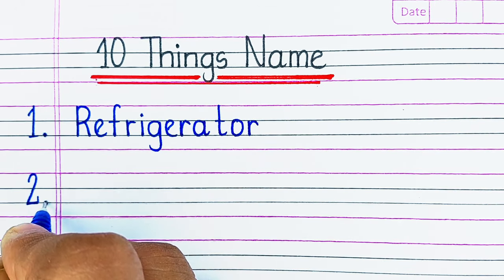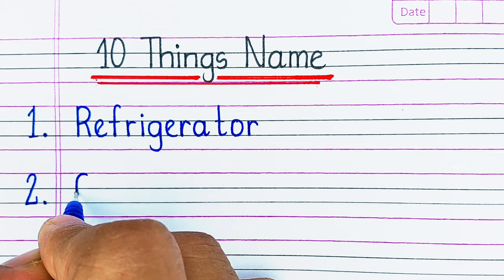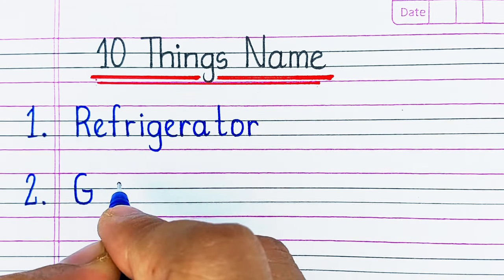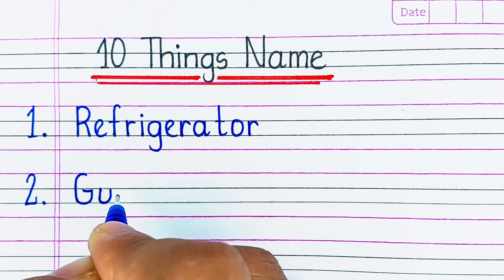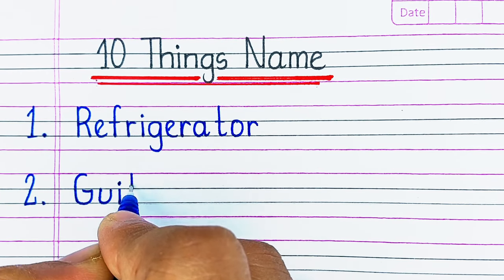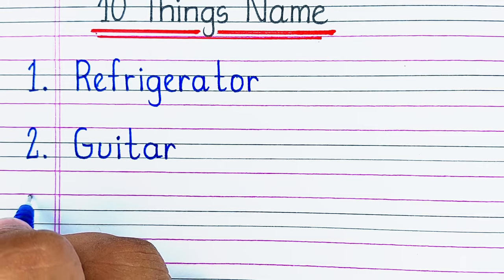First one is the cold storage at your home, i.e. a refrigerator. Refrigerator is spelled as R-E-F-R-I-G-E-R-A-T-O-R.